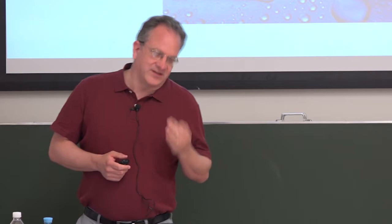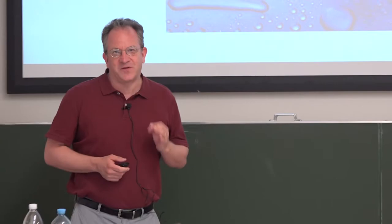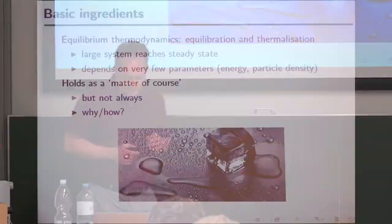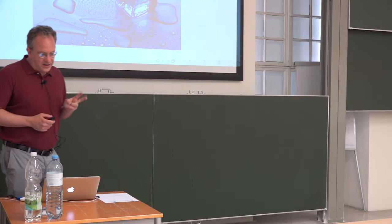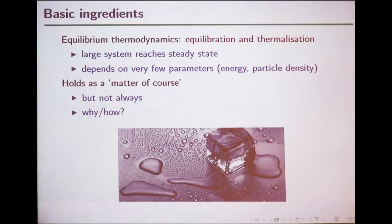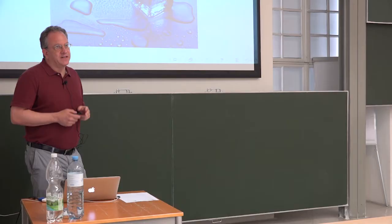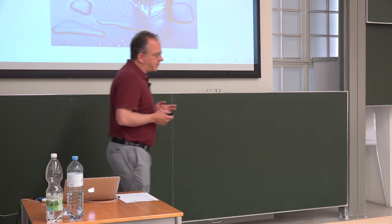When we see a picture like this, completely intuitively and without being physicists, we've got a very concrete expectation of what will happen if we come back sometime later: it's not going to look like this anymore. This intuition really comprises two ideas which are fundamental. One is the idea of equilibration, that a macroscopic system eventually will reach a steady state.